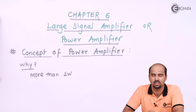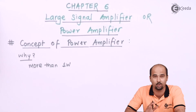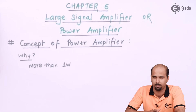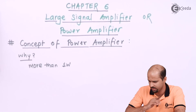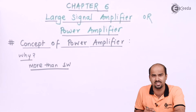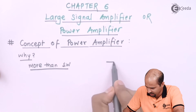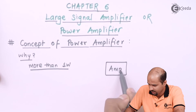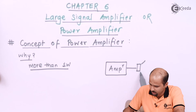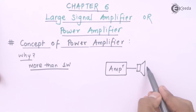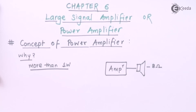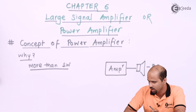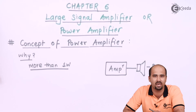In power amplifiers, we use special power MOSFETs and power BJTs. A general transistor has limitations in terms of temperature, voltage, and current. We are dealing with power greater than one watt. Whenever I have a low resistive load — for example, a speaker — as I know, a speaker has a very low resistance. So if a less-valued resistance is there at the output side, there is a need to have that much power handling capacity.